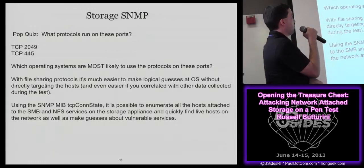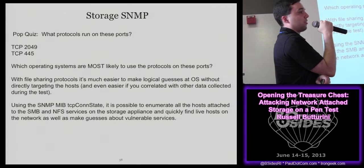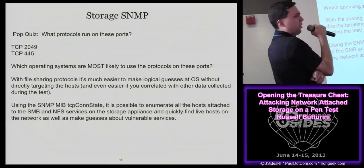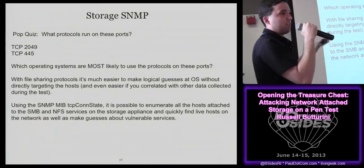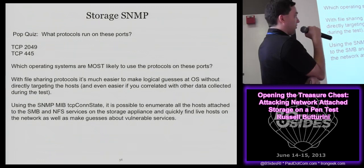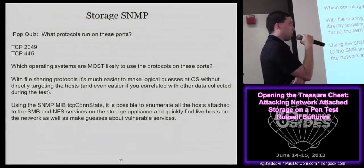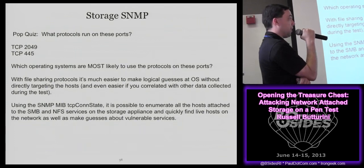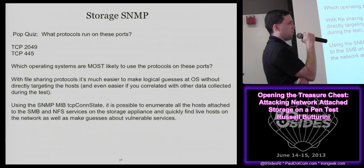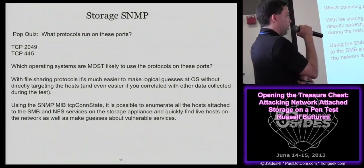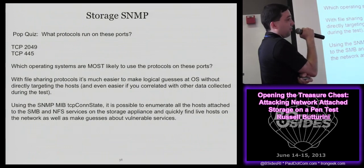Storage SNMP: the file-sharing protocol is much easier to make a logical OS guess from, particularly if you correlate with other data. If you've already found the domain controller and you see a bunch of machines connected to CIFS or SMB shares, you kind of know what's out there. There's an SMB MIB called PCPConstate that will show you basically every live TCP connection on the device. I've tried it on three different storage vendors and it worked on all three. On FreeNAS it does not work, so apparently the MIB is tied to BSD and whatever those other vendors are using. You can make logical guesses about vulnerable services and what's in use on the network.